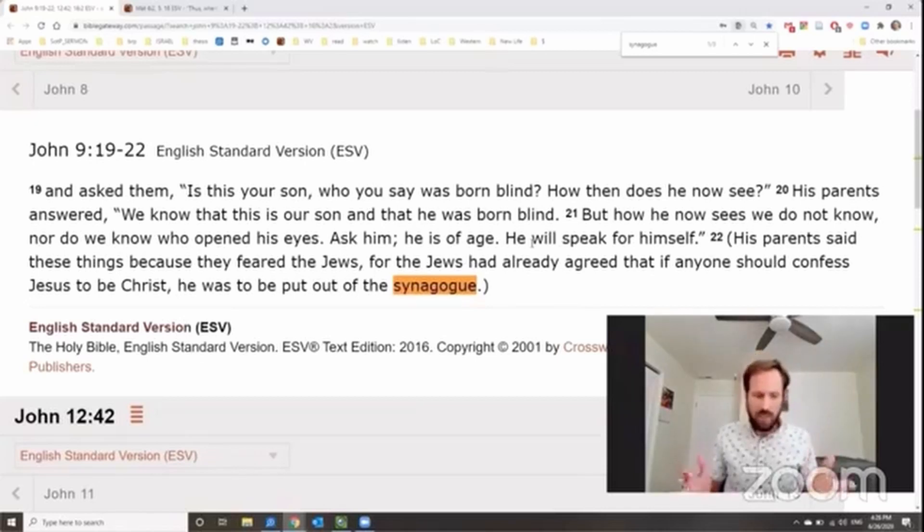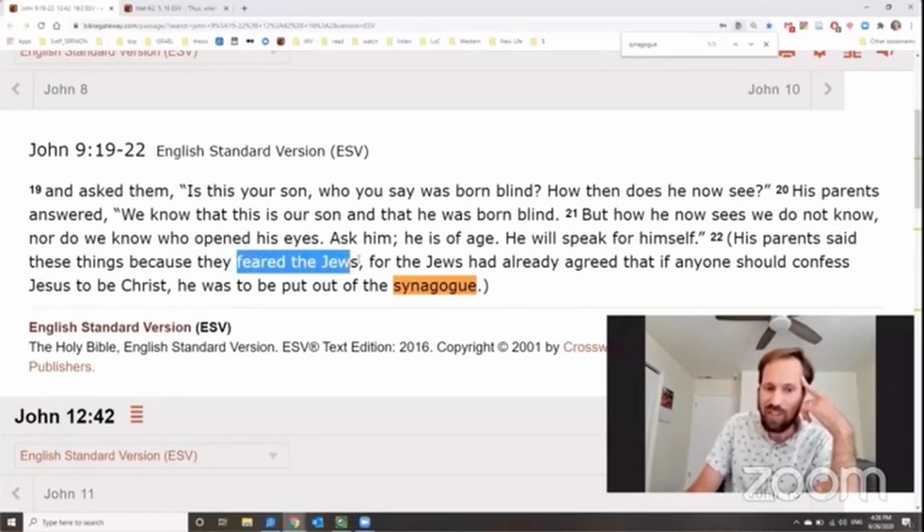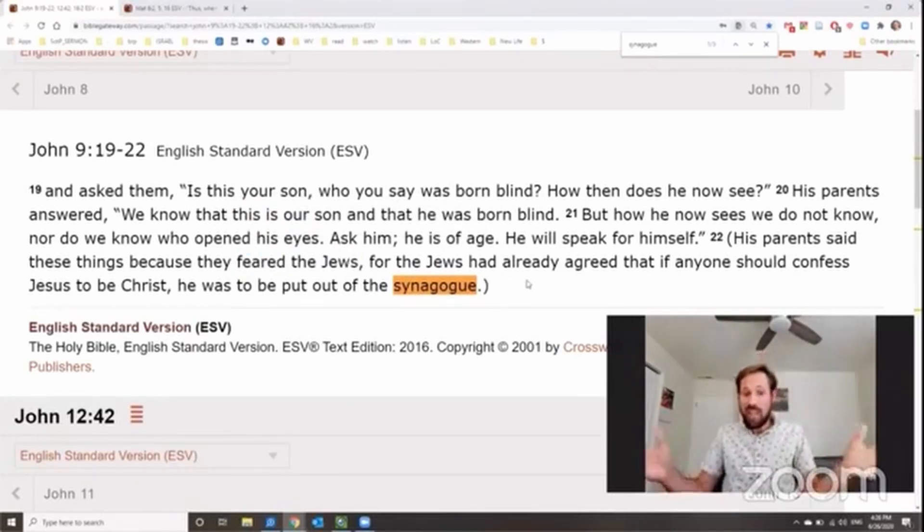Isn't that a strange reaction? You know, wouldn't you think these parents would be leaping for joy? Here, my son. He's been blind his whole life. And now he can see. Hallelujah. Who healed this guy? Well, that's this guy, Jesus. It's amazing. Why didn't the parents respond that way? It says that his parents said these things because they feared the Jews. The Jews had already agreed that if anyone would confess Jesus to be the Christ, well, that person was to be put out of the synagogue. And this blind man's parents were so afraid of being put out of the synagogue that they would even almost kind of like disown their own son after his healing. It's quite tragic.